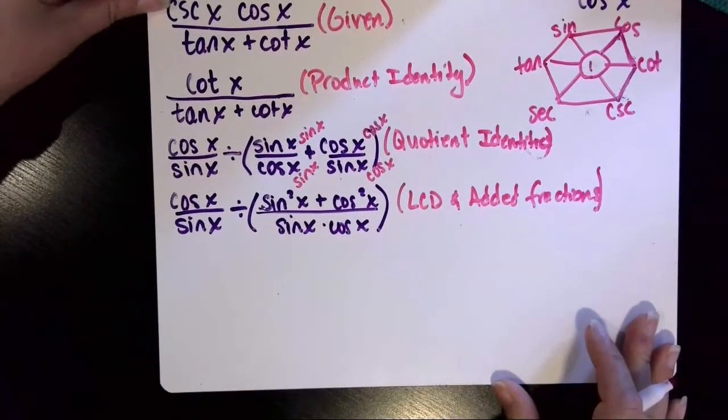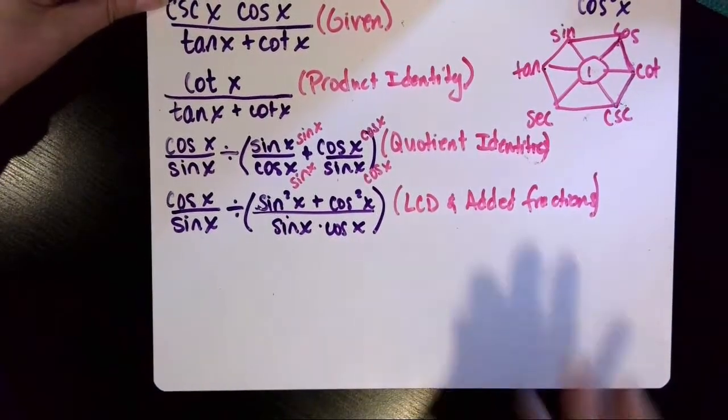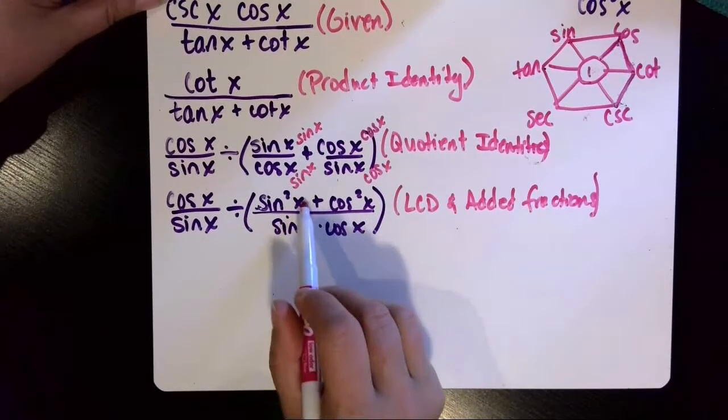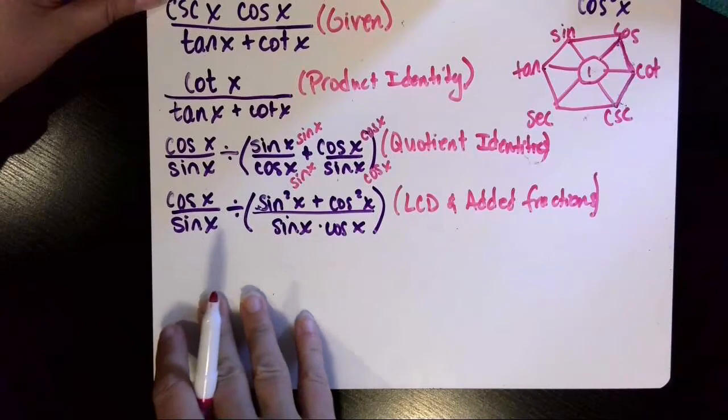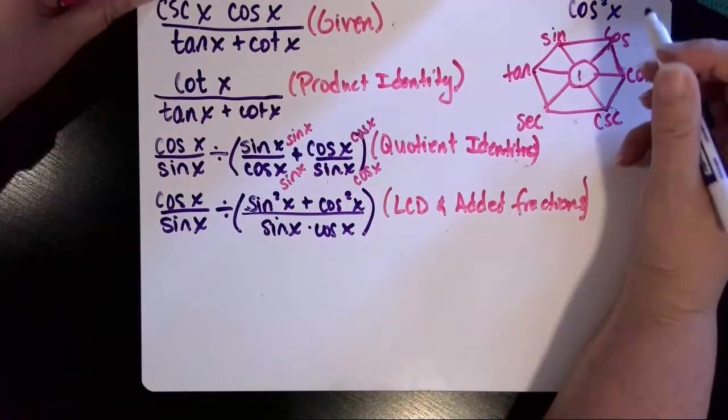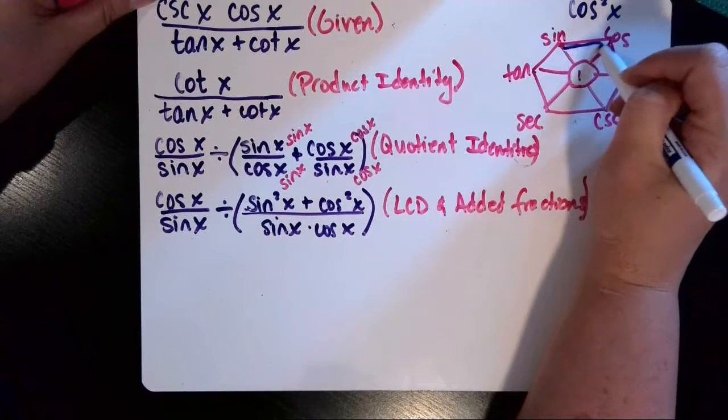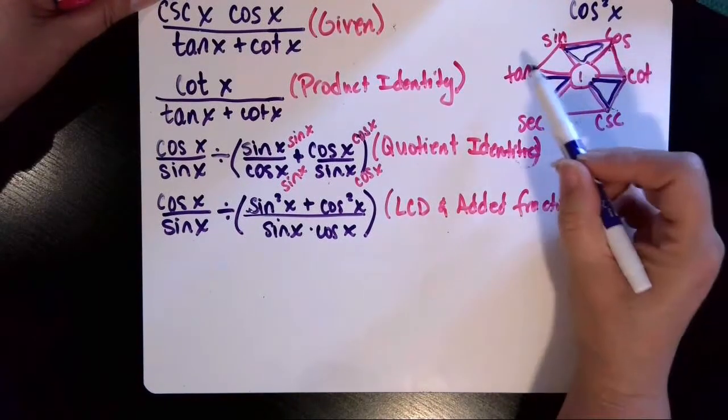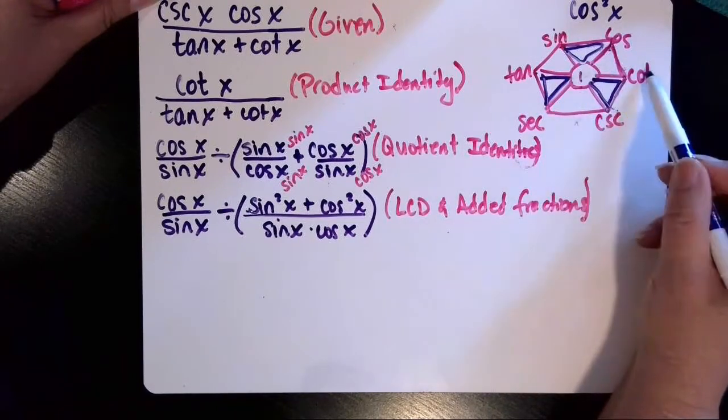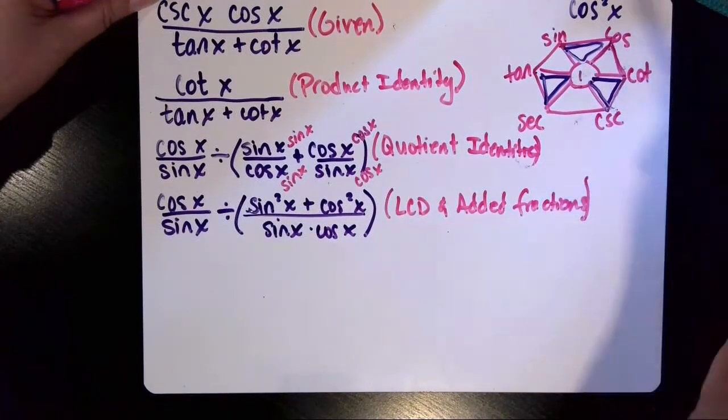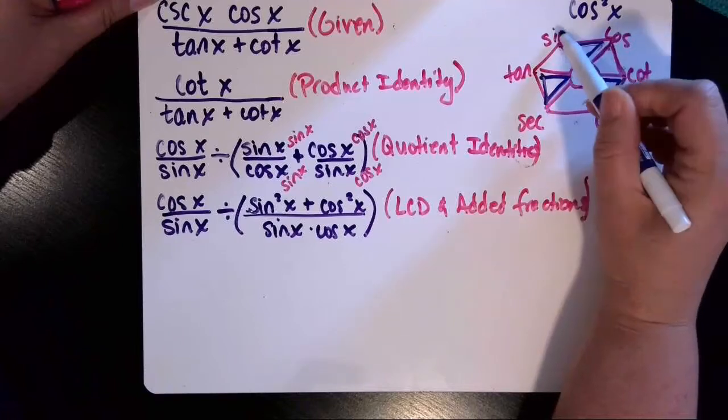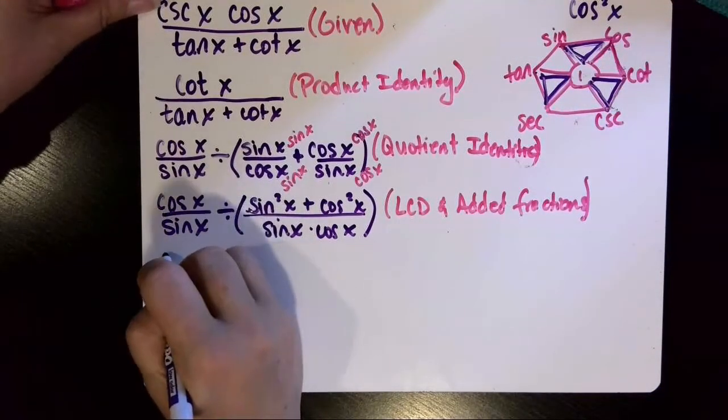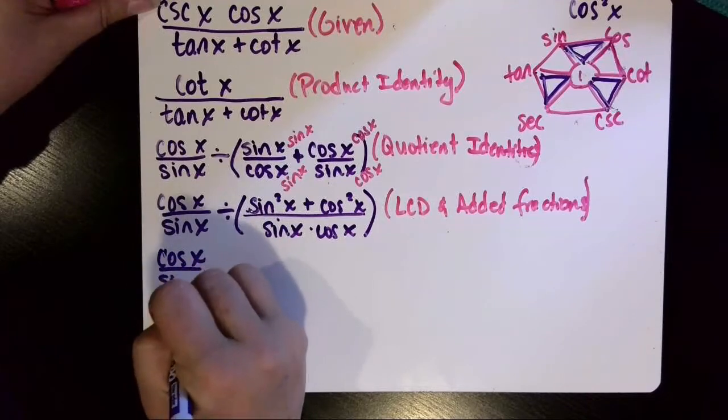Okay, so now we're at step number five. And right away here in the numerator, I've noticed that I now have a Pythagorean identity, sine squared x plus cosine squared x. Remember, in our trig hexagon, these triangles here represent the Pythagorean identities. Tangent squared plus one is secant squared. One plus cotangent squared is cosecant squared. And the one that we're going to apply in this case is sine squared x plus cosine squared x equals one from the top there. So cosine of x divided by sine of x.